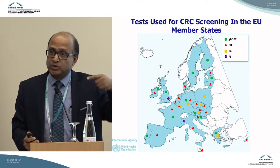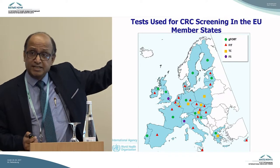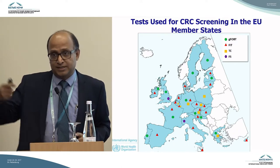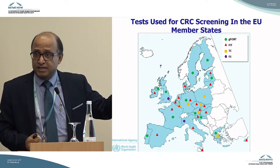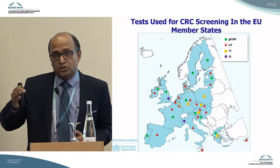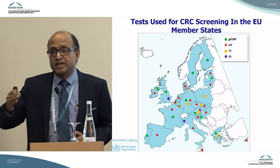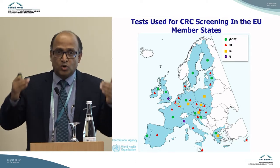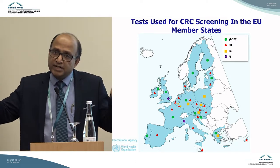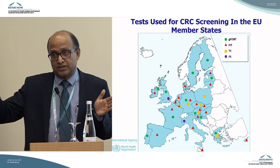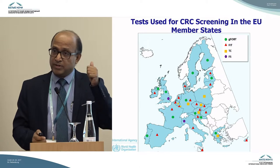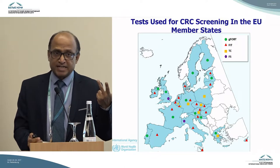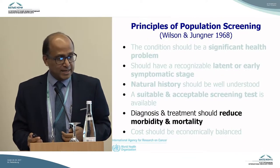Some countries like Italy are moving towards flexible sigmoidoscopy, which has to be done once every five years. And some countries like Germany, Poland, and Czechoslovakia have introduced total colonoscopy, which has to be done every ten years. The initial infrastructural need is greater, but because fewer people will require the test, it may be more cost-effective. The point is that we have good tests to detect cervical cancer, breast cancer, and colorectal cancer at the early stage.